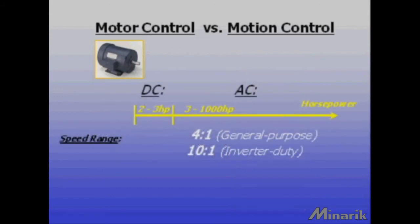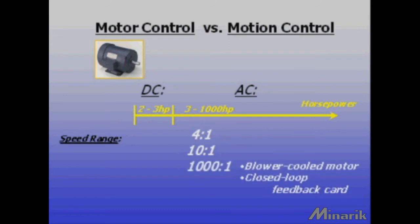AC systems often have cost advantages above 2 to 3 horsepower, but AC motors are typically limited to speed ranges of 4 to 1 for standard motors and 10 to 1 for inverter duty motors. Vector duty motors with external cooling can achieve up to 1000 to 1.